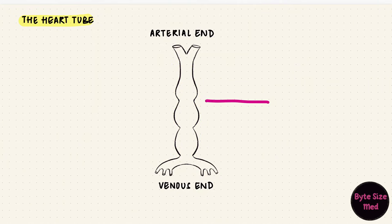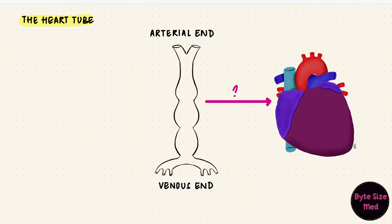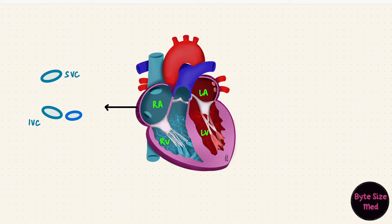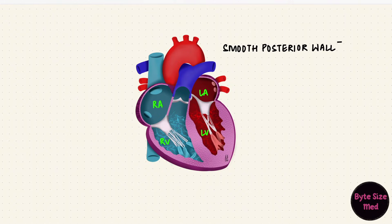It still looks nothing like what the heart is supposed to look like, and it's incredible how it goes from this to that. To understand how, let's first look at some of the structures of the heart that need to develop. The heart has four chambers: the right atrium, the left atrium, the right ventricle, and the left ventricle. The right atrium receives blood from the superior vena cava, the inferior vena cava, and the coronary sinus. The left atrium receives blood from the four pulmonary veins. In both atria, all these openings are on the posterior wall, making it smooth. The anterior wall is rough, with muscular ridges called musculi pectinati.